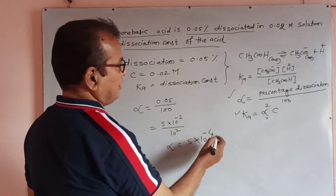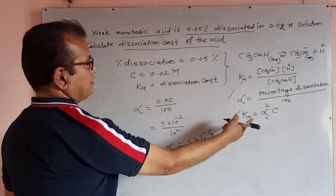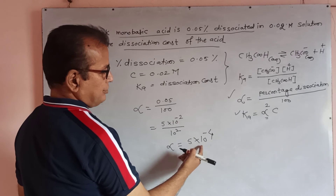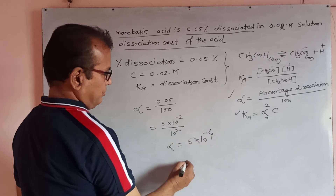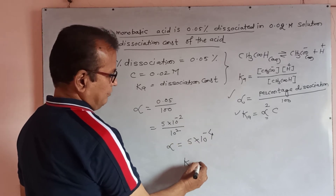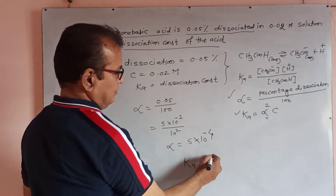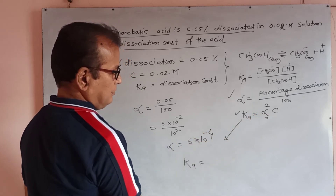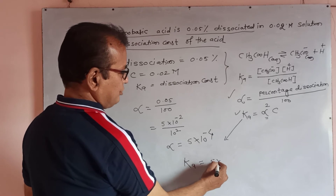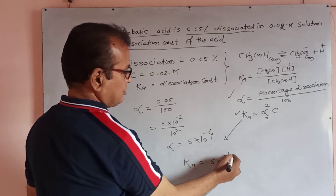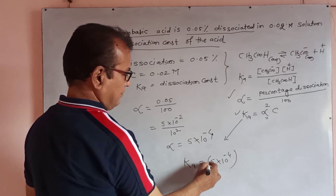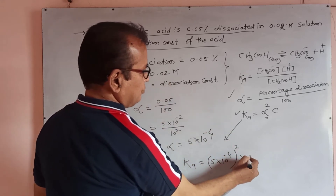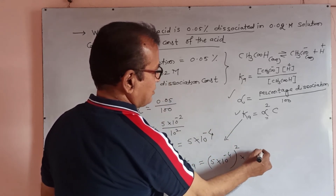After alpha determination, C is 0.02 mol and alpha is 5 × 10⁻⁴. Now put these values into the formula Ka = α²C. So Ka equals (5 × 10⁻⁴)² multiplied by C, which is 0.02, that is 2 × 10⁻².